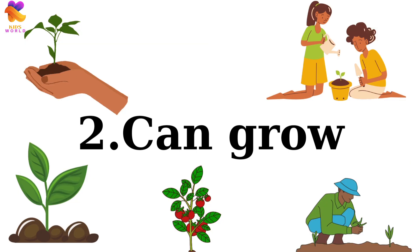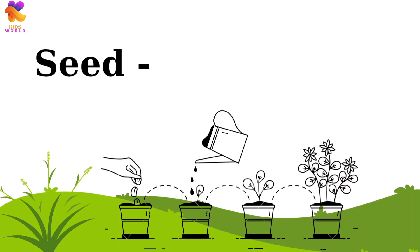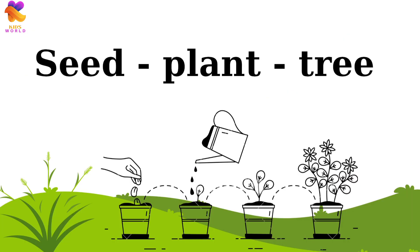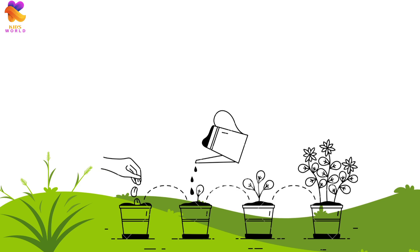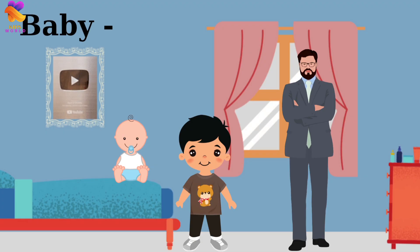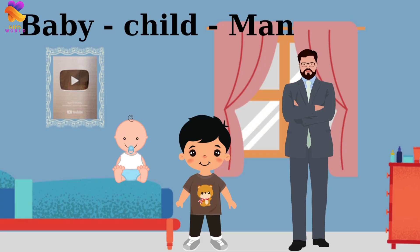Living things can grow. A seed grows into a plant, and then into a tree. A baby grows into a child, and then into a man.